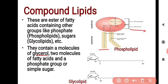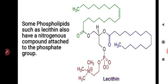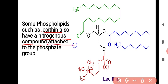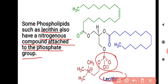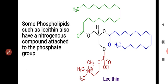Phospholipids contain two molecules of fatty acids, a phosphate group, and a simple sugar. Some phospholipids, such as lecithin, also have a nitrogenous compound attached to the phosphate group. This is a key property of phospholipids — the nitrogenous group is attached to the phosphate group. Lecithin is an example of such a phospholipid.